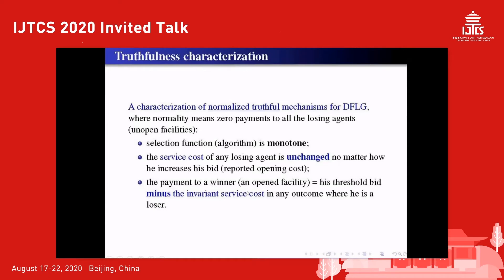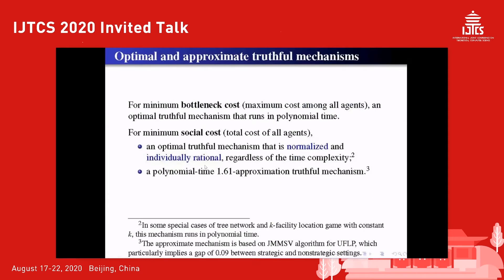Under a truthful mechanism, the payment to a winner — an open facility — should be their threshold bid minus the invariant service cost in any outcome while they are a loser. We design optimal and approximate truthful mechanisms for minimizing the bottleneck cost — that is, the maximum cost among all agents — and for minimizing the social cost — that is, the total cost of all agents. For the bottleneck objective, we provide an optimal truthful mechanism running in polynomial time. For the social cost objective, we give an optimal truthful mechanism regardless of time complexity, and a polynomial-time 1.61-approximation truthful mechanism. Although the optimal mechanism falls in the VCG framework, it remains challenging to ensure normality and individual rationality.